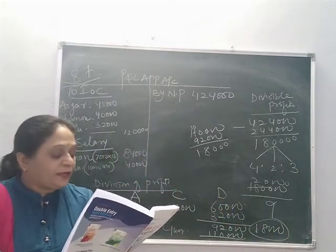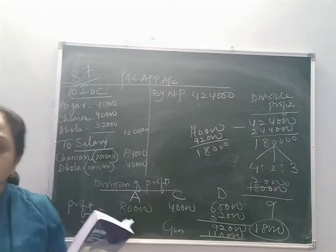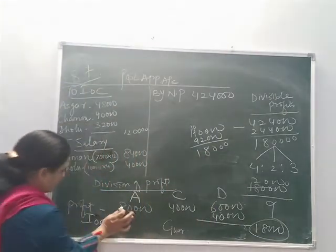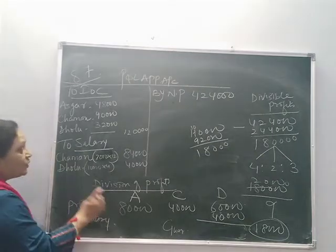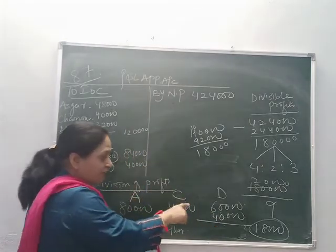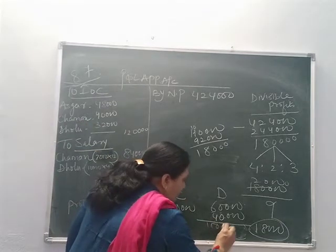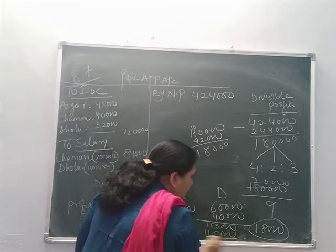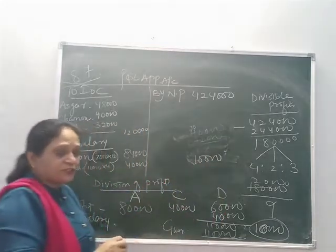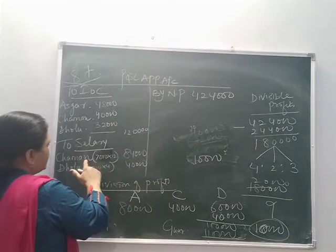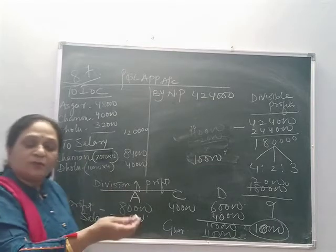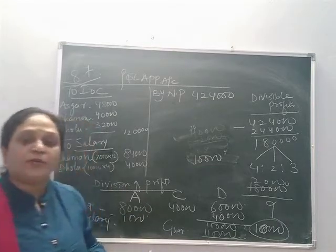1,10,000 minus 1,00,000 gives a deficiency of 10,000. What has been said? Any deficiency arising out of it shall be met by Asghar. So the deficiency is not 18,000 but only 10,000, which will be borne by Asghar personally. He will give 10,000 to Dholu and that is how the guarantee will be fulfilled. Now we will prepare the P&L appropriation account.